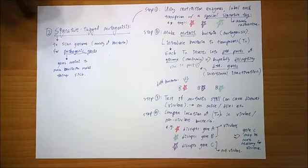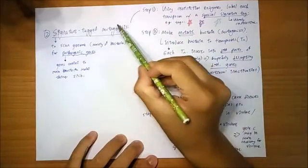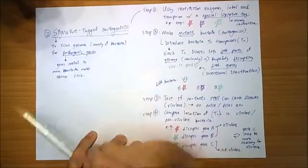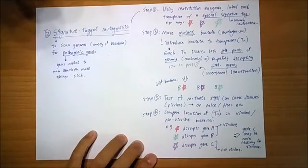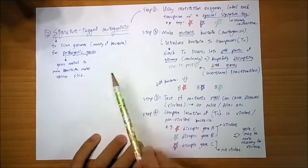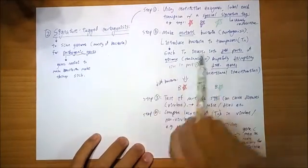The next application is signature tag mutagenesis. Mutagenesis means making mutants. Genesis is making things. And these are mutants. To do this, I'll explain this later.